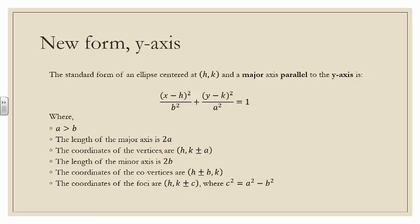Similarly, the standard form of an ellipse centered at h, k with a major axis parallel to the y-axis is: the quantity x minus h squared all over b squared, plus the quantity y minus k squared all over a squared, equals 1, where a is greater than b.